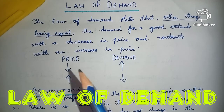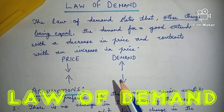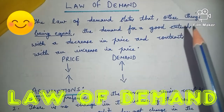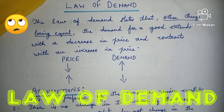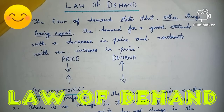In the law of demand, when price declines or decreases, demand increases; when price increases, demand declines. Now, what is the meaning of 'other things being equal'? The term 'other things being equal' means that the income of the consumer, his taste and preferences, and prices of other related goods remain constant.